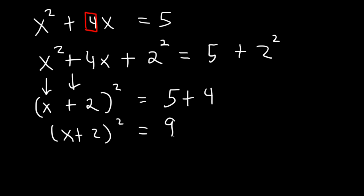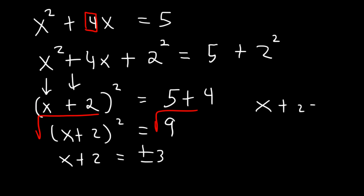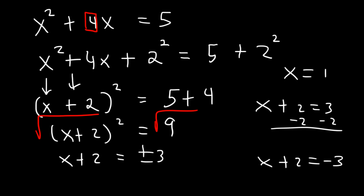So now let's solve for the variable x. Let's take the square root of both sides. The square root of x plus 2 squared is x plus 2, and the square root of 9 is plus or minus 3. So now we have two equations: x plus 2 is equal to 3, and x plus 2 is equal to negative 3. So if we subtract both sides by 2, we can see that x is equal to 1. That's one of the answers. And for the other one, negative 3 minus 2 is negative 5, so x is equal to negative 5.